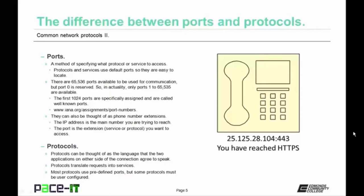The first 1,024 ports are specifically assigned and are called well-known ports, assigned by the IANA. Ports can be thought of as a phone number extension — the IP address is the main number you're trying to reach, and the port number is the extension, the service or protocol, that you want to access. Protocols can be thought of as the language that two applications on either side of the connection agree to speak. Protocols translate requests into services. Most protocols use predefined ports, but some must be user configured and some don't have a designated port at all.